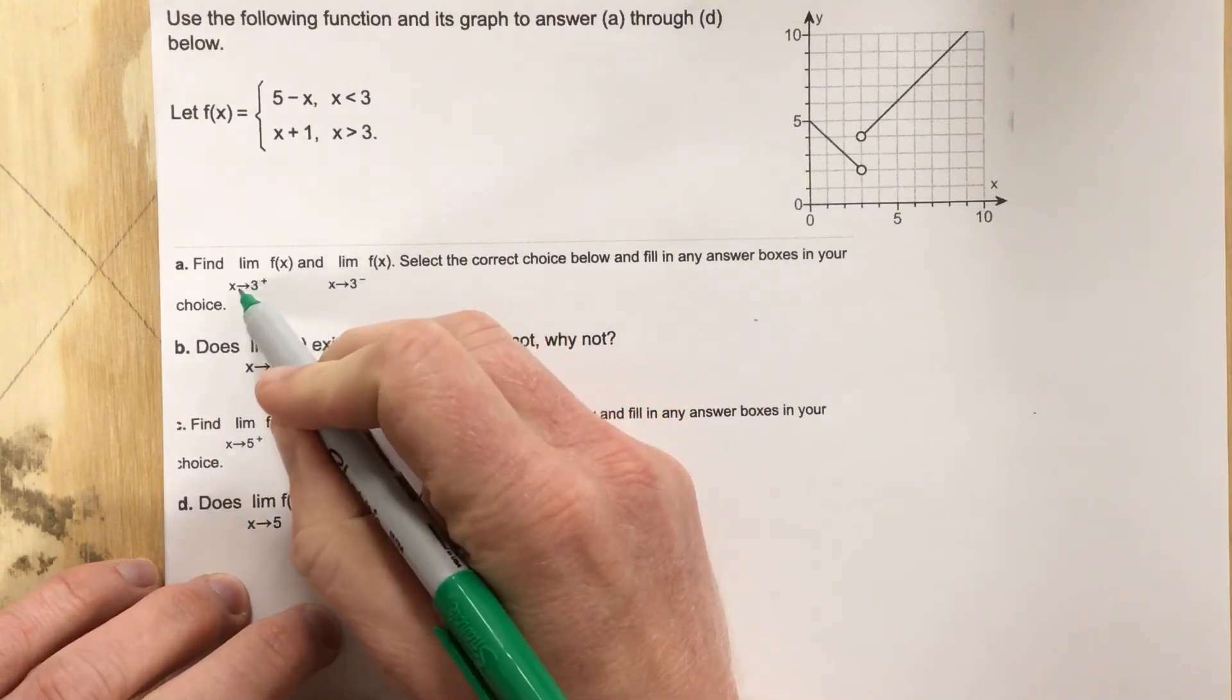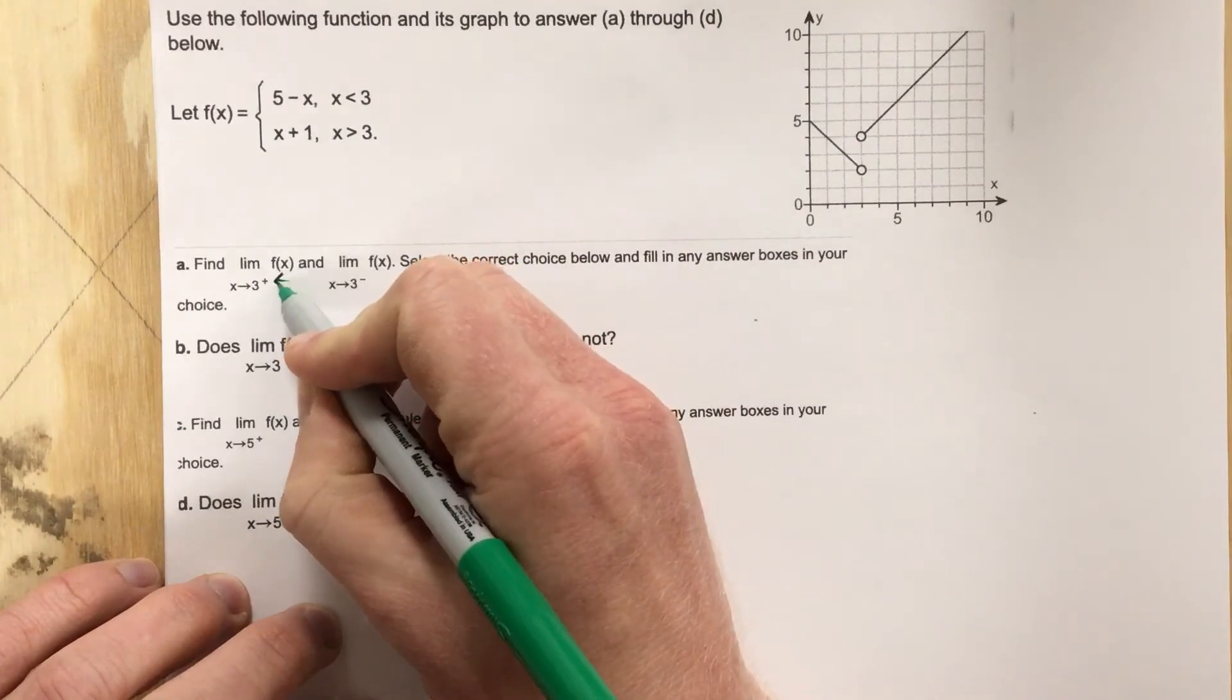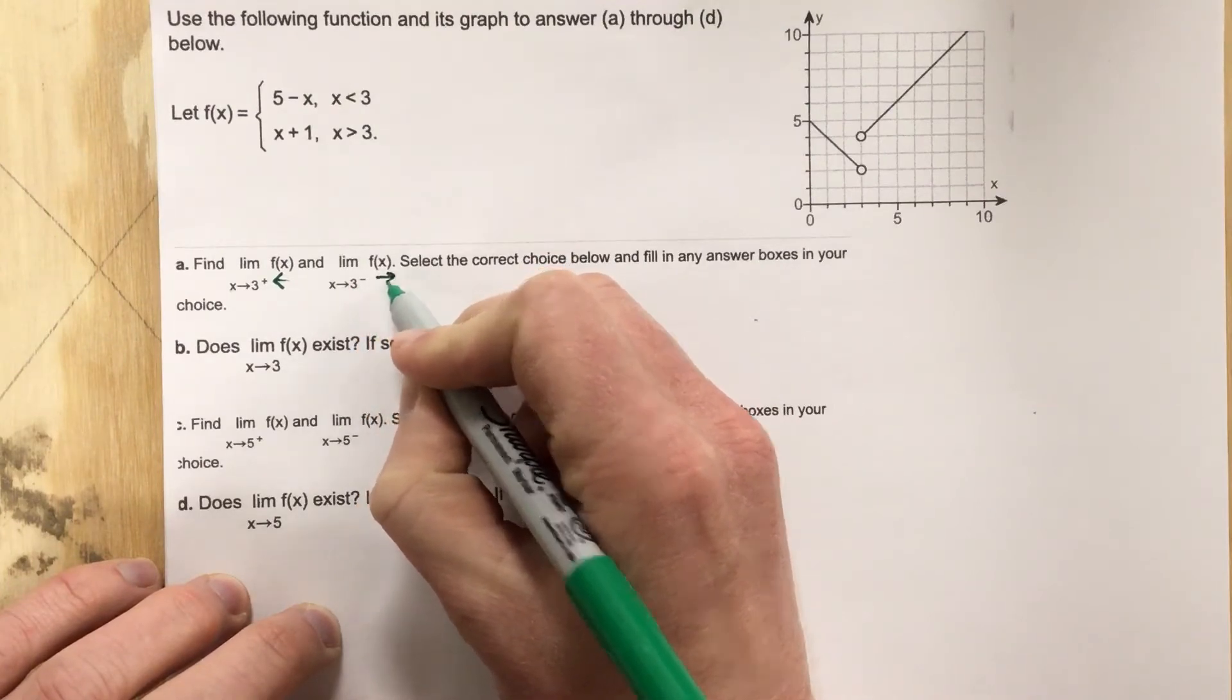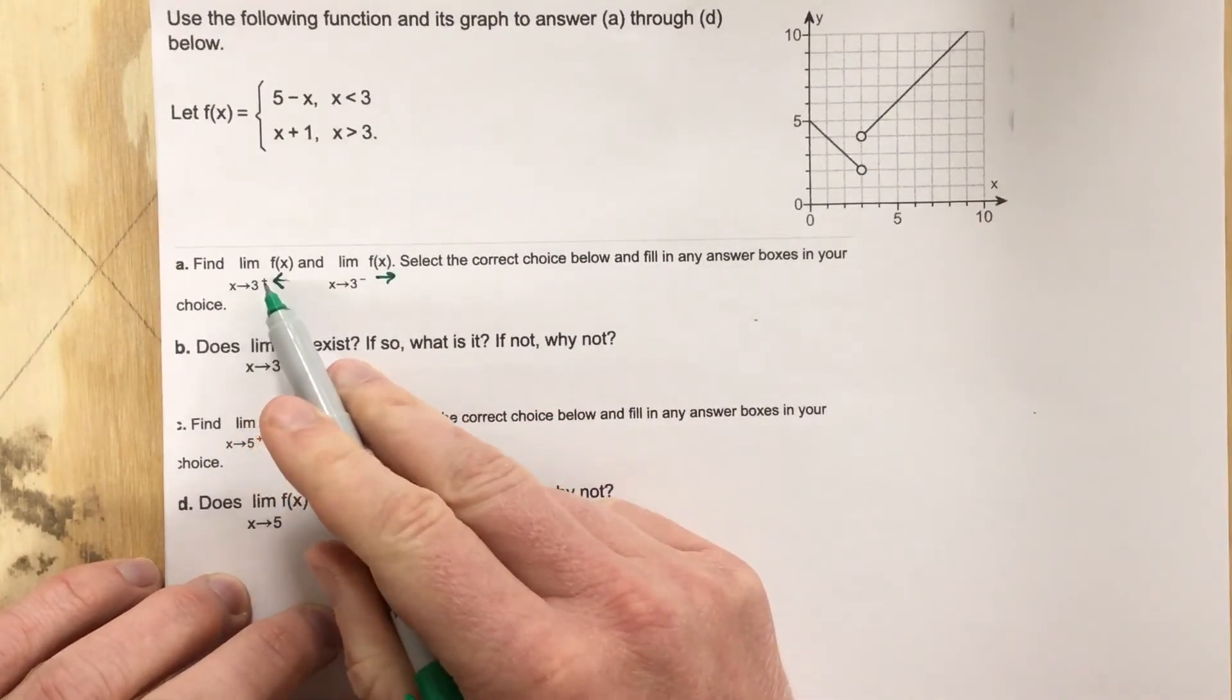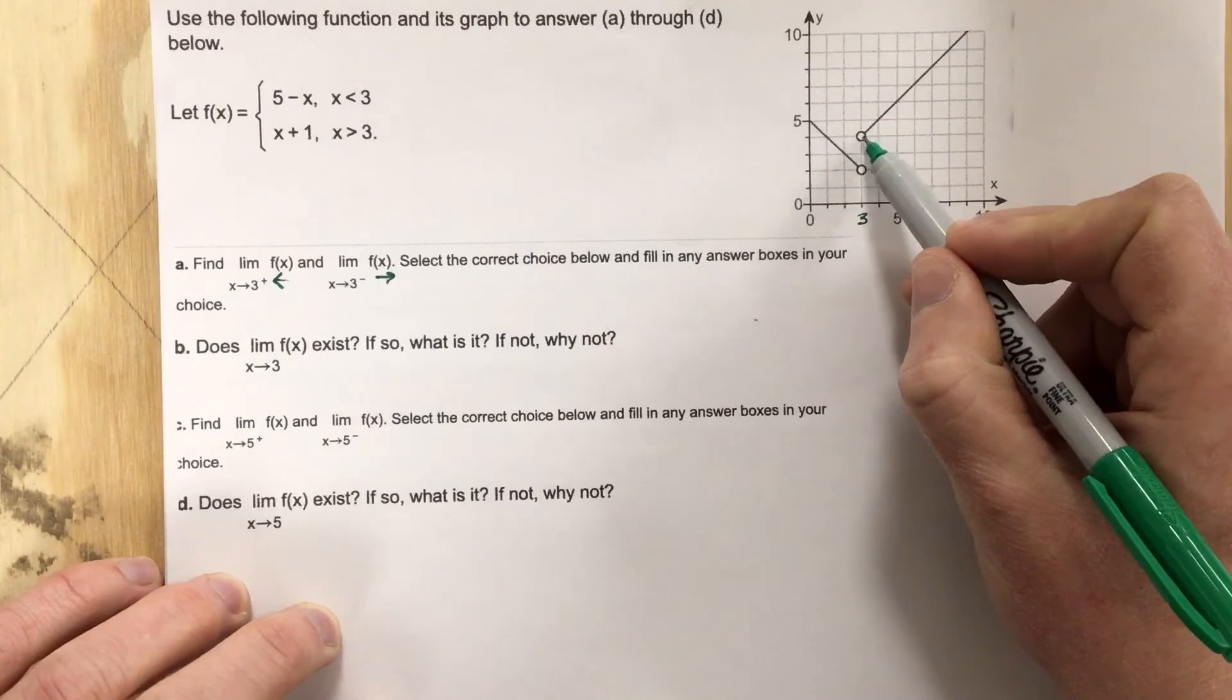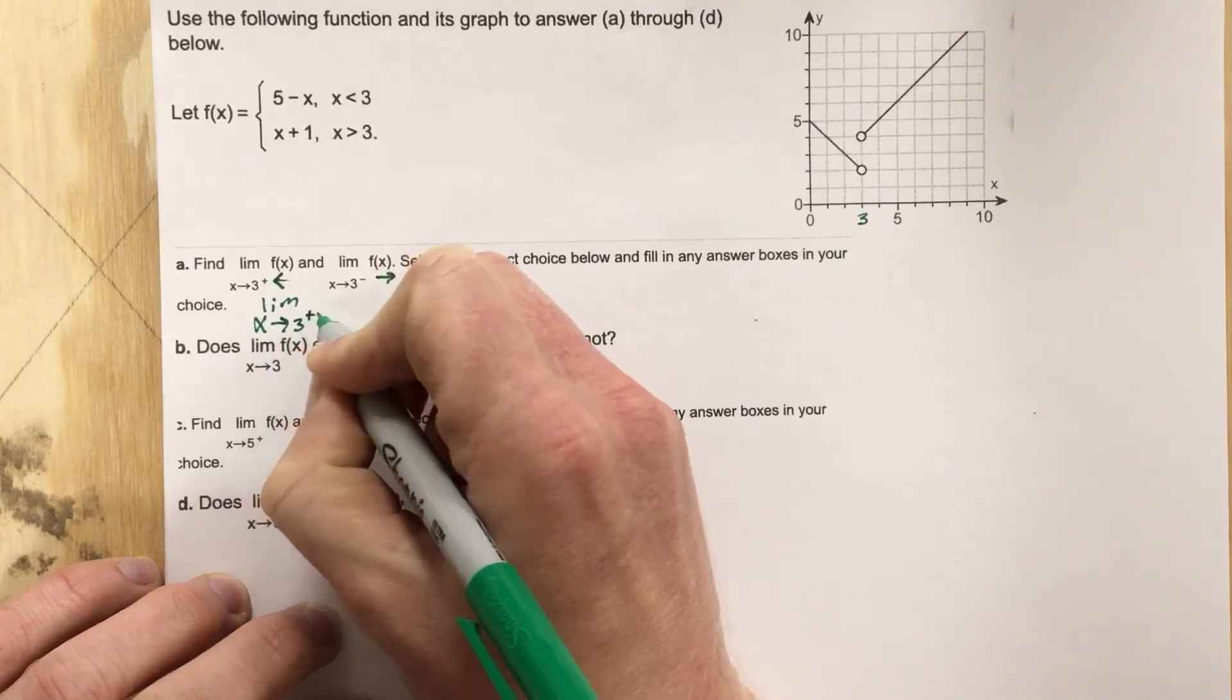Because it says x approaches three from the positive side, meaning it's approaching from the right side. So anytime you see this you might just mark an arrow that I'm going to look at it from this side and this is approaching three from the negative side which is from the left side. So as x approaches three from the right, well x is three here, as I approach from the right I'm approaching the y value of four. So the limit as x approaches three from the right equals four.